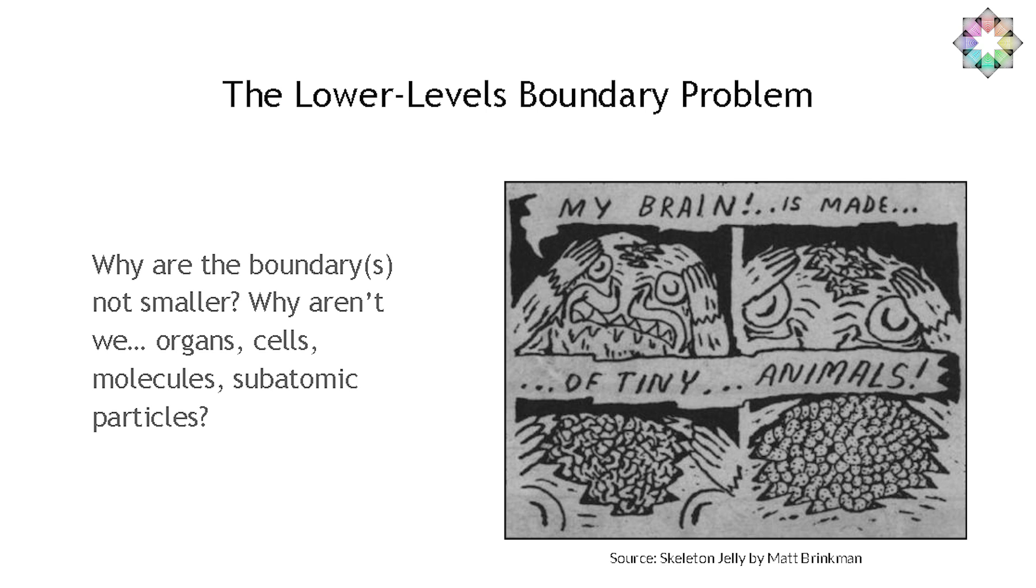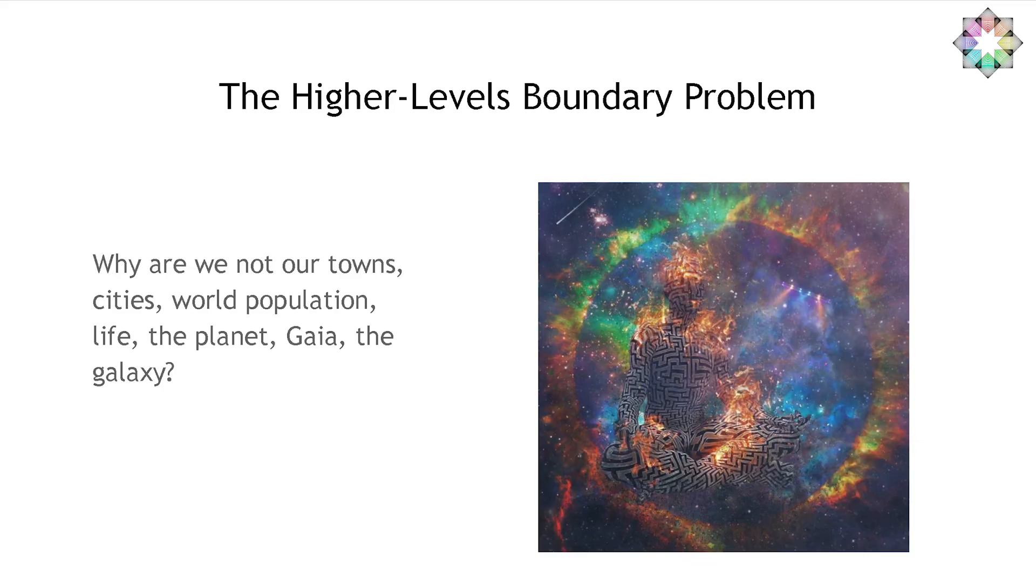The second one is the lower level boundary problem. My brain is made of tiny animals. Why aren't we neurons? It's a very puzzling thing. We seem to be like whole brains for some reason. The higher level problem is, why aren't we the planet, Gaia, the galaxy?